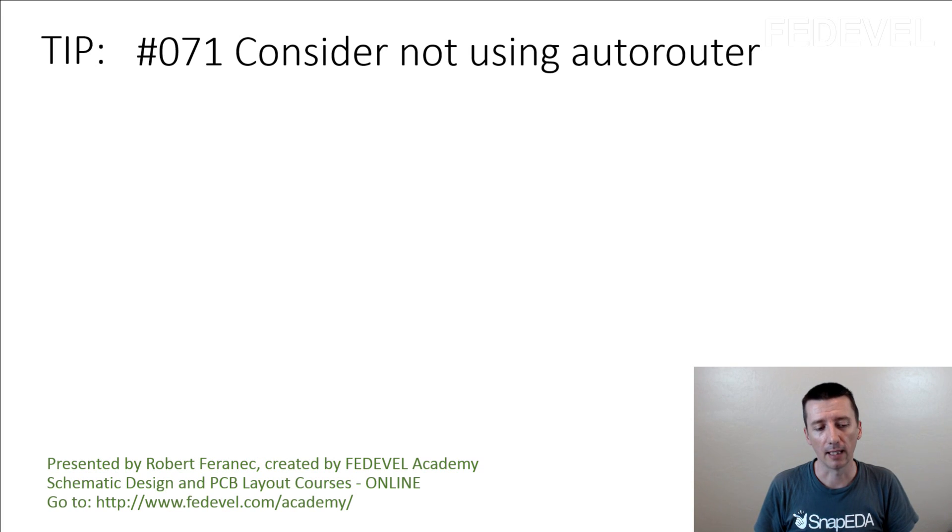I tried it, I spent like one week setting up all the rules. It was quite a difficult board with a lot of rules, there were these memory interfaces, so I had to set the rules for all the groups and the rules between the signals, between the groups and the length matching stuff. So it really took like a week to set up all the rules and then I hit the autorouter button and guess what happened?